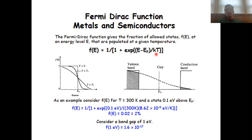At T equal to zero, the Fermi-Dirac function has a rectangular shape. Below the Fermi level, the fraction of the states that are occupied is 100%, and above the Fermi level, the fraction of the states which are occupied is 0%.